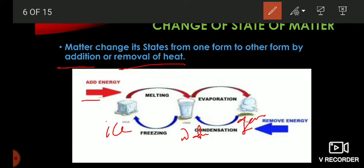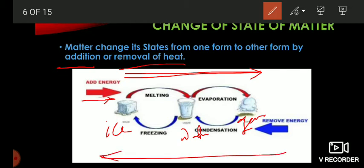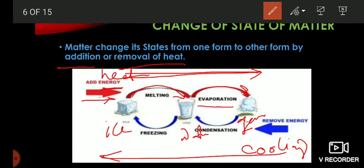When we add energy (heat) going towards the right, and remove heat energy going towards the left — when heat is added to ice, by the process of melting it changes into water (liquid state). When liquid is again heated, by the process of evaporation it changes into gas. When gas is cooled, by the process of condensation it changes into liquid again. When liquid is further cooled, by the process of freezing it changes into ice or solid.